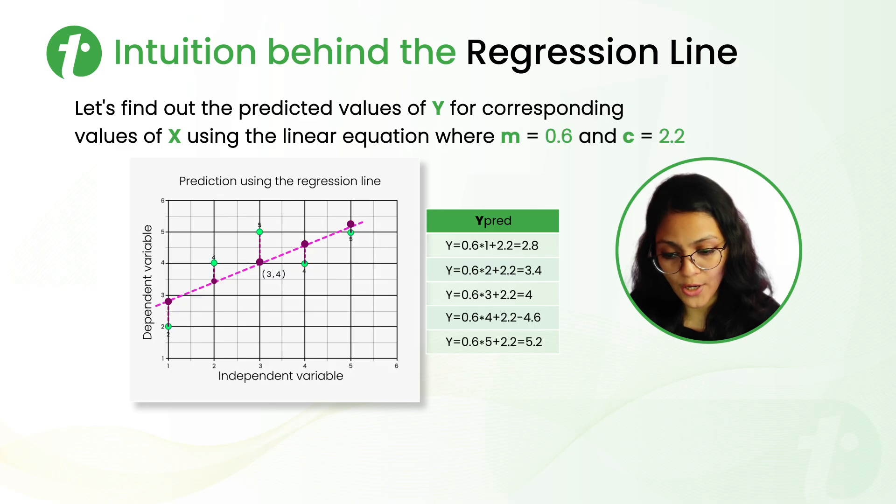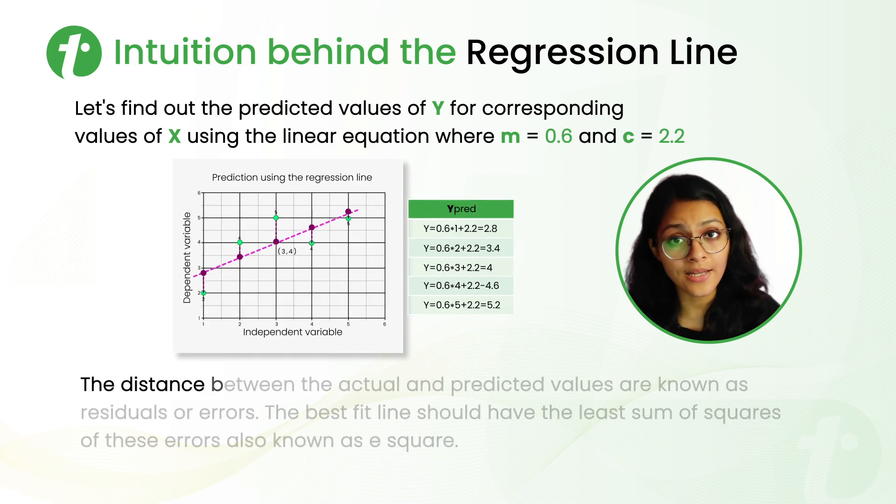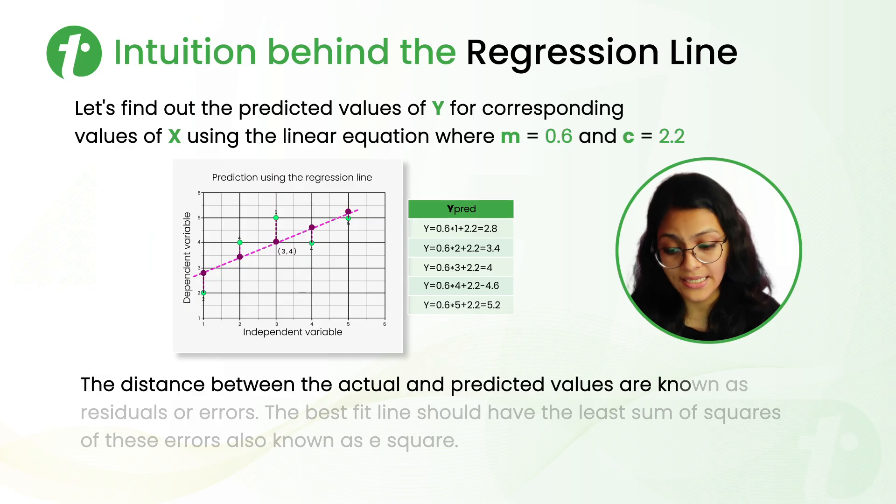Here, these violet points on the line are the predicted values of Y. And these green points are the actual values of Y. And the distance between the actual value and the predicted value is known as residuals or errors.